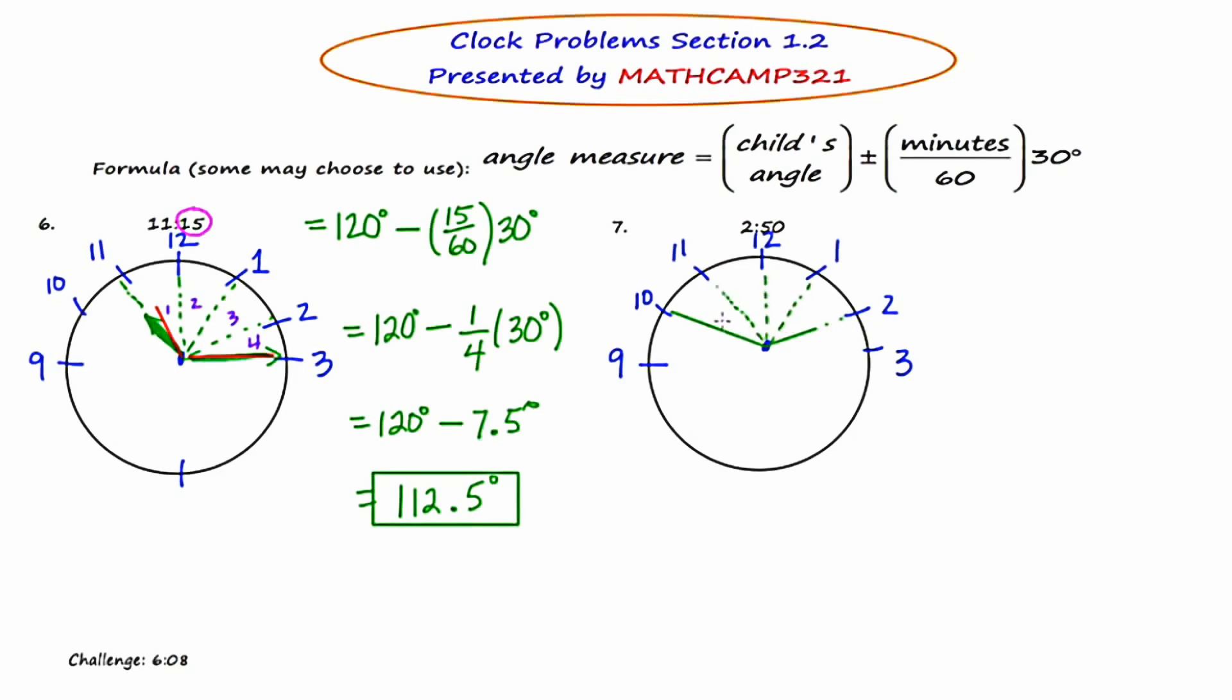And if we establish the sections now, we have one, two, three, four sections. Four sections at 30 degrees each equals a child's angle. That's 120.